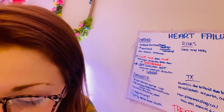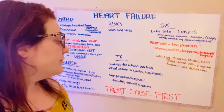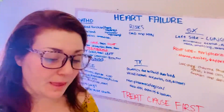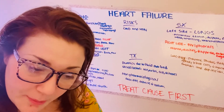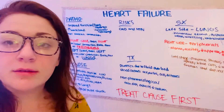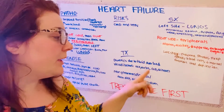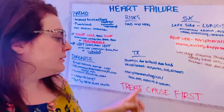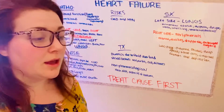For treatments, because of that fluid accumulation you can use diuretics — including loop, thiazide, potassium-sparing, carbonic anhydrase, and osmotic diuretics. And vasodilators: ACE inhibitors (-pril), ARBs (-sartan), calcium channel blockers (-pine), nitrates, and nitroglycerin. For non-pharmacological methods, the DASH diet — you want to limit the patient's sodium intake — and exercise.